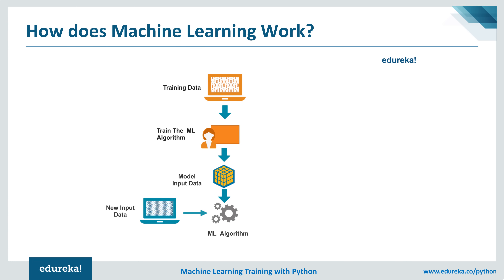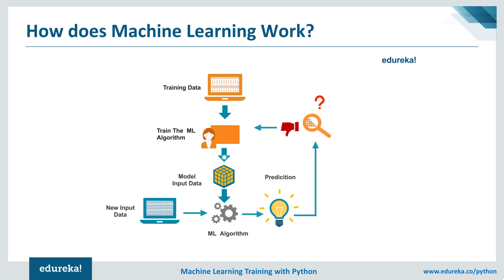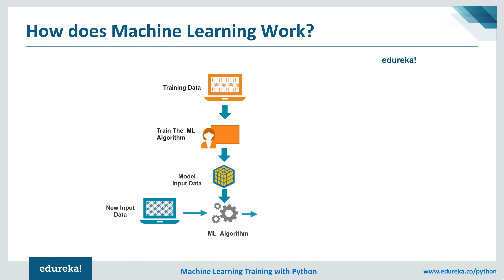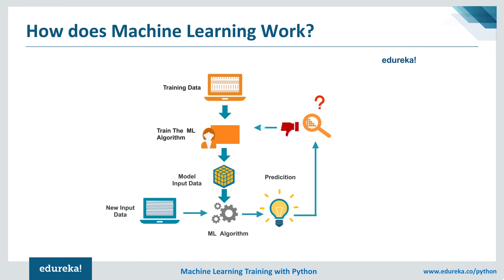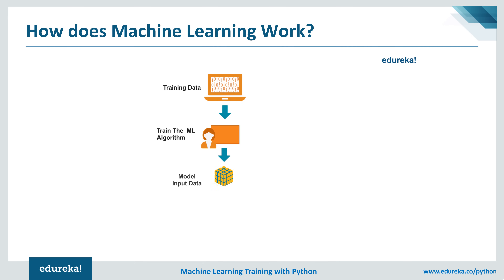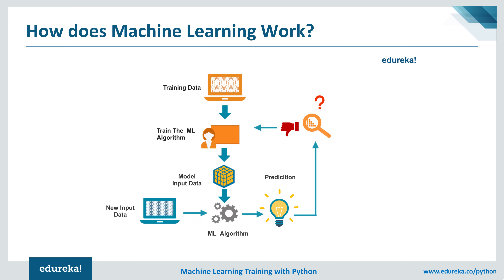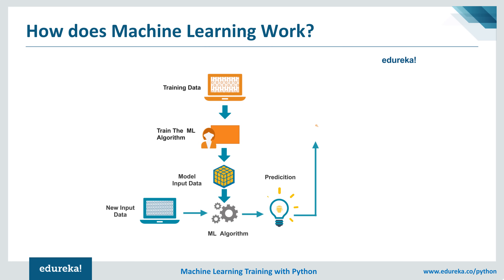Let's see in general how machine learning works. One approach is where a machine learning algorithm is trained using a labeled or unlabeled training dataset to produce a model. New input data is then introduced to the algorithm, and it makes predictions based on the model. The prediction is evaluated for accuracy, and if the accuracy is acceptable, the machine learning algorithm is deployed. If the accuracy is not acceptable, the algorithm is trained again with an augmented training dataset. This is just a high-level example, as there are many more factors and steps involved.